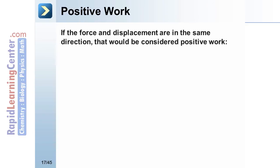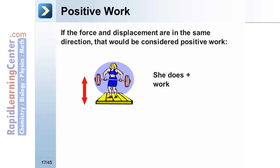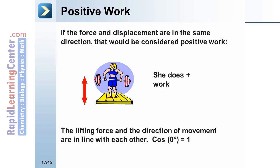Positive work. If the force and displacement are in the same direction, that would be considered positive work. In this example, the person lifts the weight above the ground. The lifting force and the direction of movement are in line with each other. Thus, the angle between them is zero degrees. Cosine of zero degrees equals one. In this example, this is positive work.